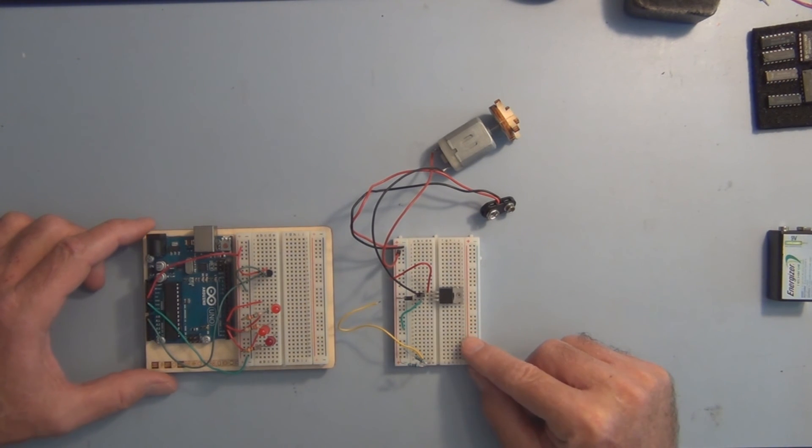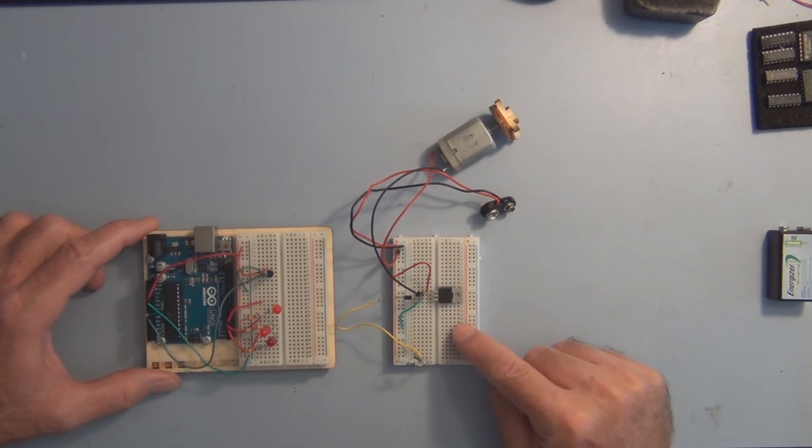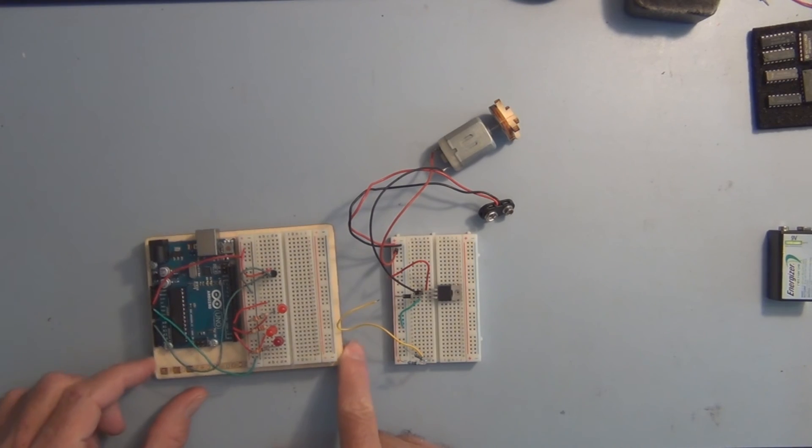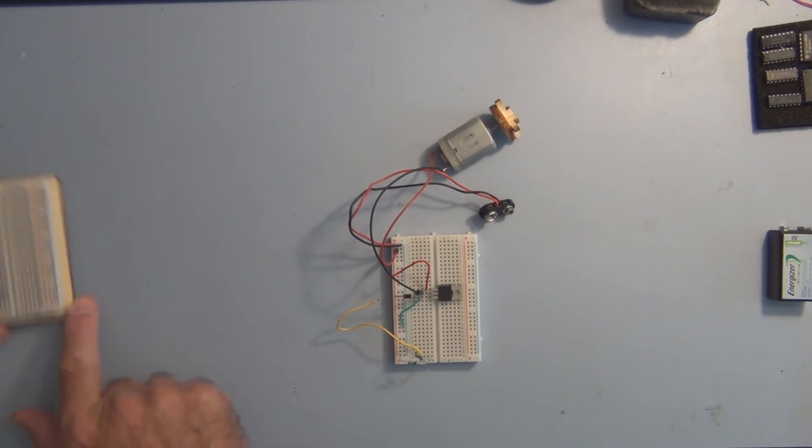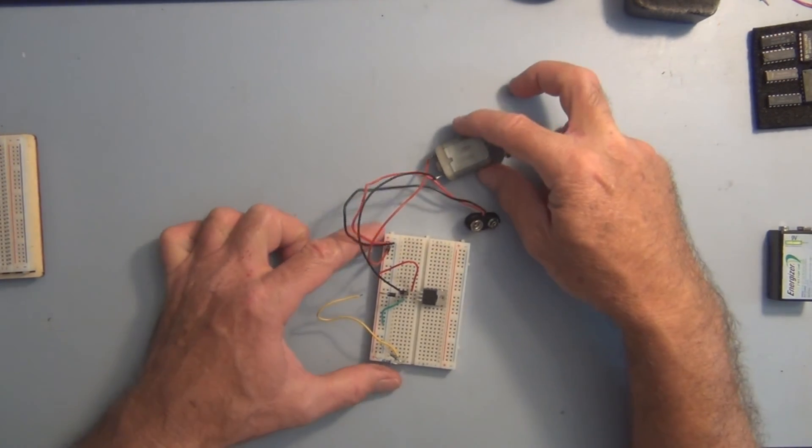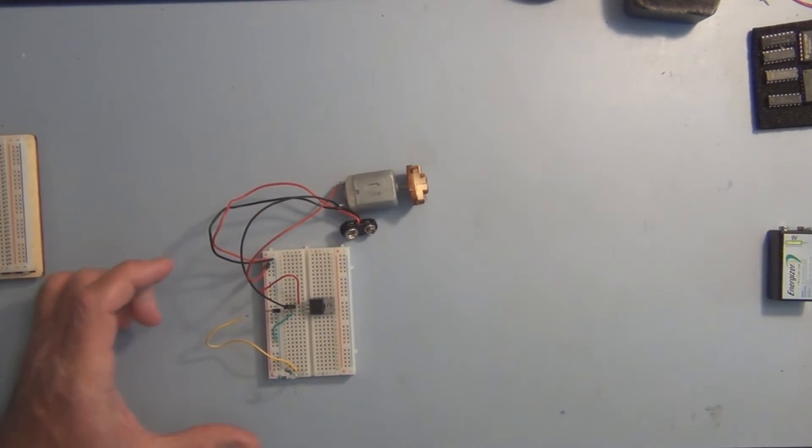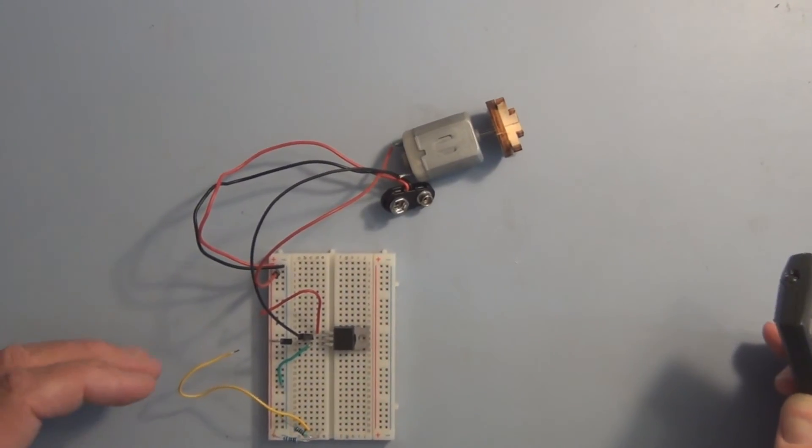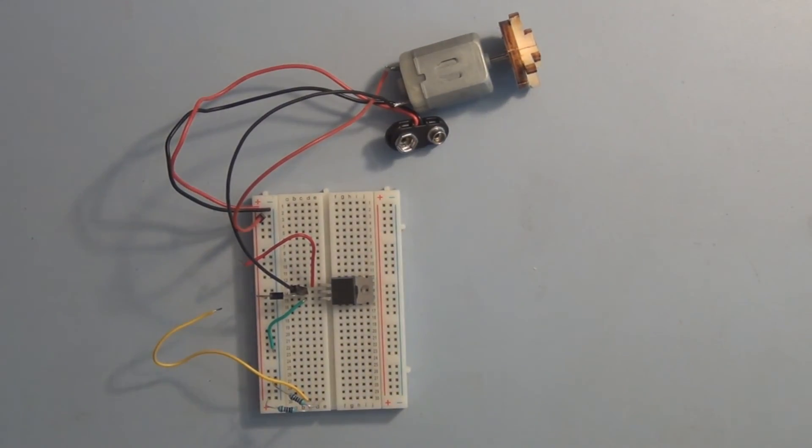But one thing you might want to do is simplify the problem by breaking it into pieces. For that particular motor experiment, we're just turning the MOSFET on and off with one of the output pins of the Arduino. So you can take the Arduino out of the equation to just try to get your motor circuit working separately. And then once you have the motor working, then you can concentrate on the code or the wiring for your Arduino.